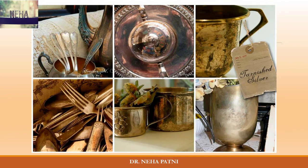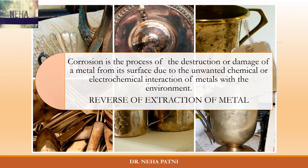Look at all these images. I hope you're able to understand one thing which is common — these are tarnished metals. They are poor quality because they are corroded. Hi, I am Neha and in this video I'm going to tell you what corrosion is all about. Corrosion is basically the process of destruction or damage of a metal from its surface due to unwanted chemical or electrochemical interaction of metal with the environment.